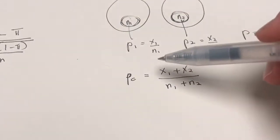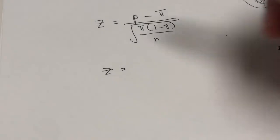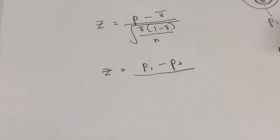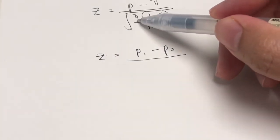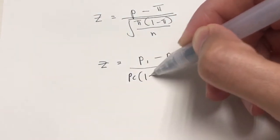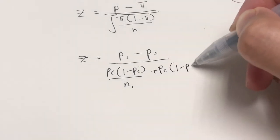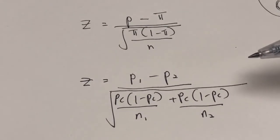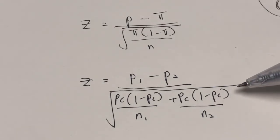Once we've calculated the pooled proportion, we need to find the test statistic. The formula is still z, but up here, instead of p minus pi, it is P1 minus P2, because we have two samples. And down here, as for the standard error, instead of using pi, we use PC, the pooled proportion. So it becomes the square root of PC times 1 minus PC over the first sample size, plus PC times 1 minus PC over the second sample size. In order to get this test statistic, we need to calculate the pooled proportion first.